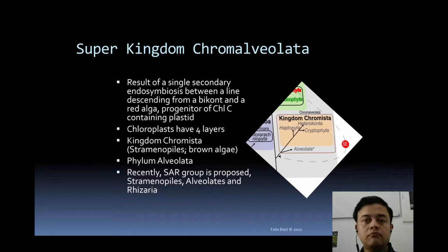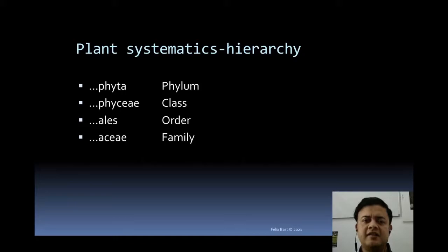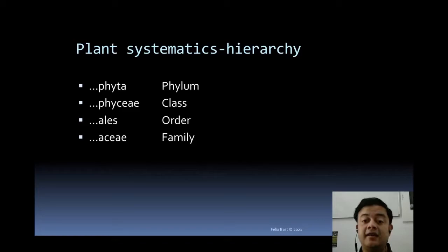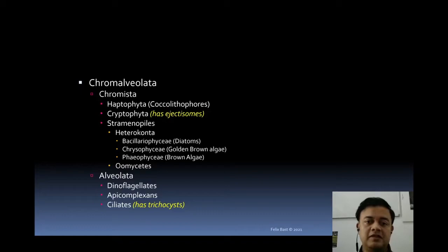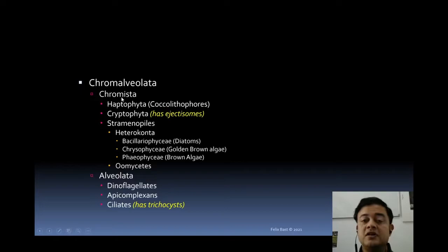In plant systematics, the naming hierarchy is: phyta ending for phyla, phycia for class, ales for order, and rca for family. Using this guideline you can identify taxonomic rank. Inside Chromalveolata, Chromista and Alveolata are the two major groups. Chromista is a kingdom while Alveolata is an unclassified group.